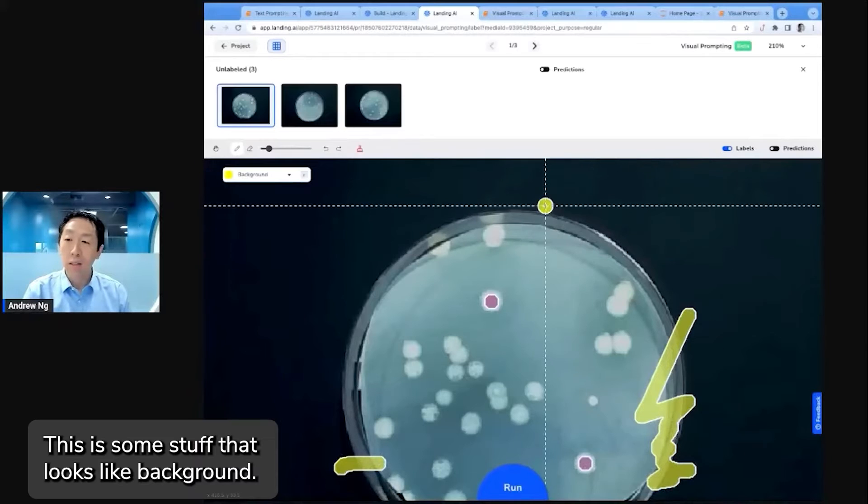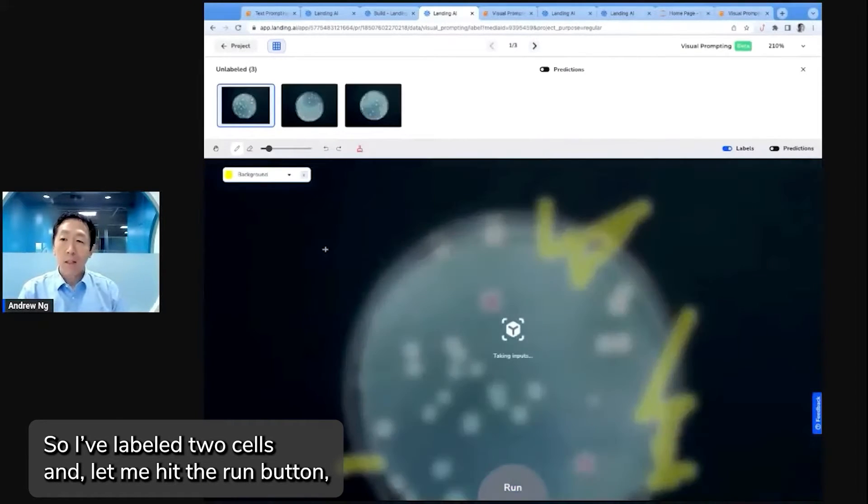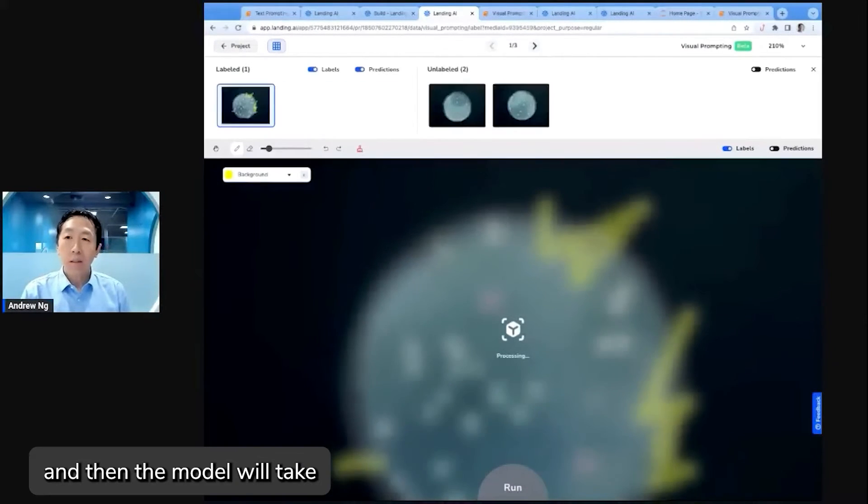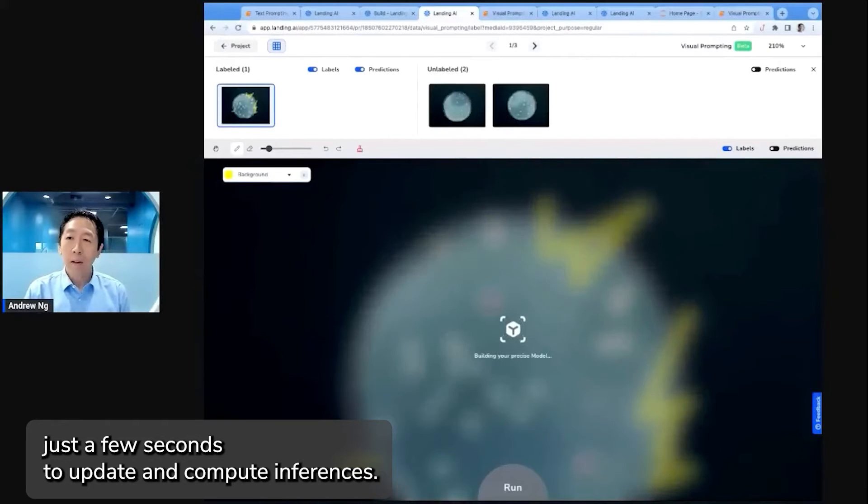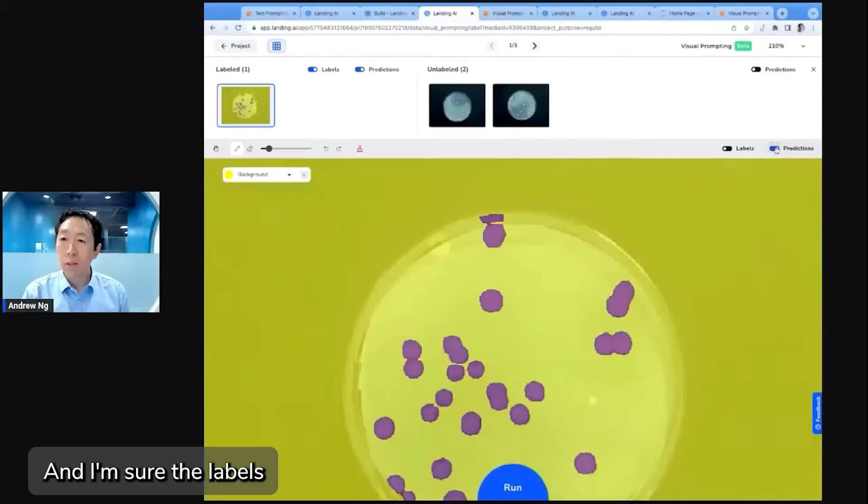Yeah, there's some stuff that looks like background. So I labeled two cells and then the model will take just a few seconds to update and compute inferences. And I'll show you the labels.